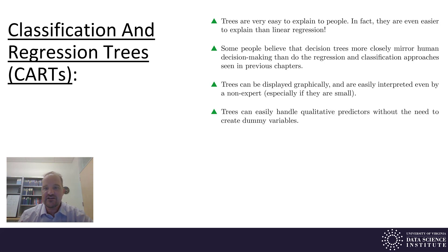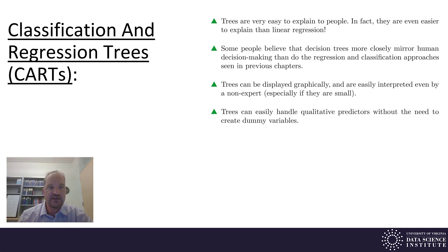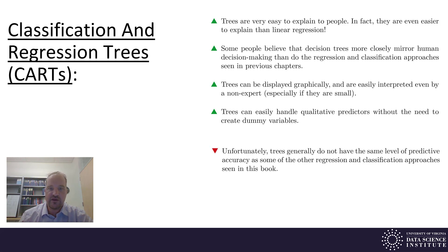Trees can handle qualitative predictors without the need to create dummy variables. When you encounter a qualitative predictor, you can just check it and send down the two separate branches, depending on what its value is.